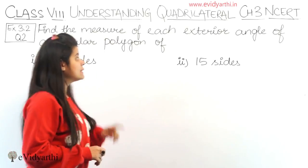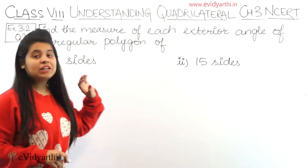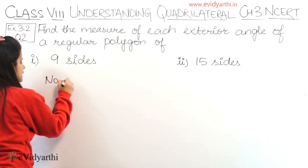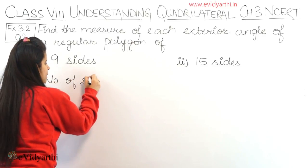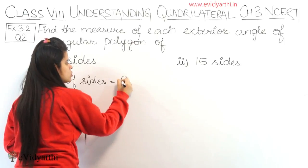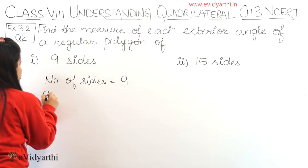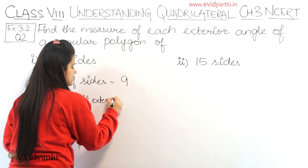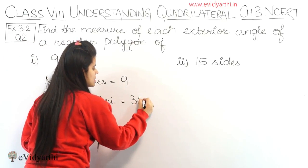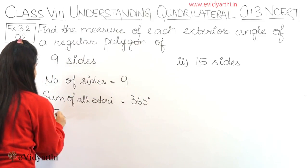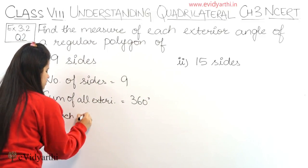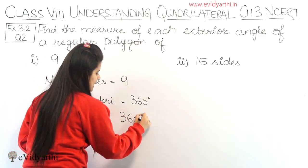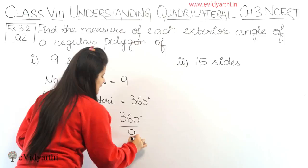So we have to find the exterior angle measure if the polygon has this many sides. First, let's write it down: number of sides equals to 9. And we know that sum of all exterior angles is equals to 360 degrees. So each angle will be equal to 360 degrees upon 9.